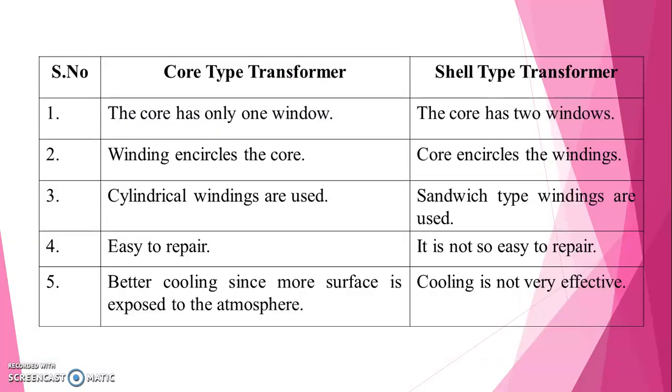Let us take the difference between core type and shell type. The first one, core has only one window. But in shell type core has two windows. Winding encircles the core in core type. But in shell type core encircles the winding. Cylindrical windings are used in core type. Sandwich type windings are used in shell type.